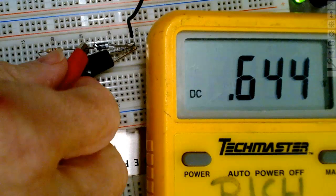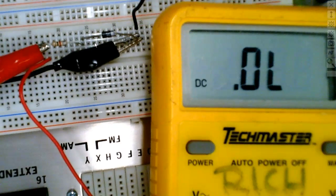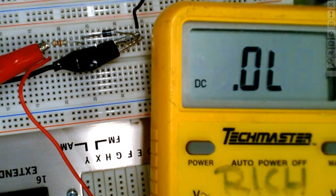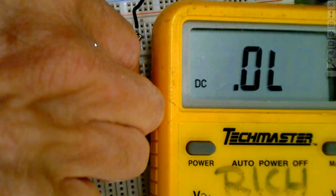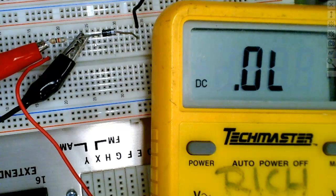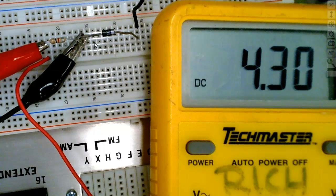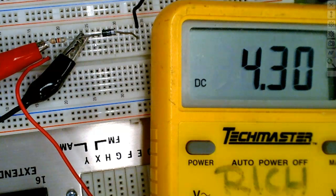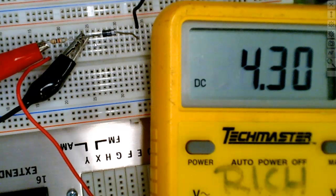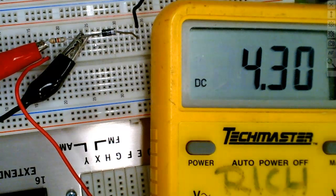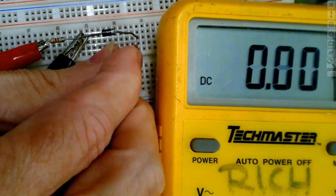This is forward bias. When I look across here, Kirchhoff's voltage law says the sum of voltage drops have to equal the applied voltage. This is going to be about six tenths of a volt less than what we have. That's about six tenths or seven tenths of a volt. We've got about five volts applied. It's not a closed switch but it acts like it. Now I'm going to change my positive and negative.